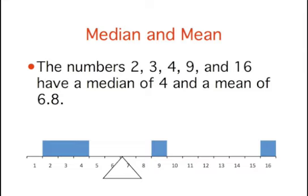To see this in action, let's apply these principles to a set of 5 numbers: 2, 3, 4, 9, and 16, with their median of 4 and their mean of 6.8. You can see that the distribution indeed balances at the mean of 6.8 and not the median of 4.